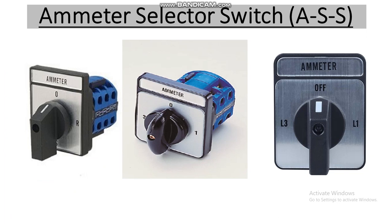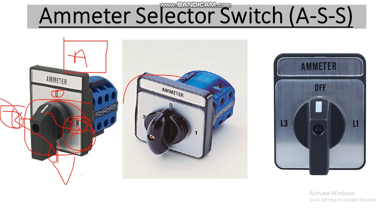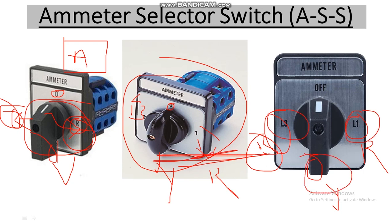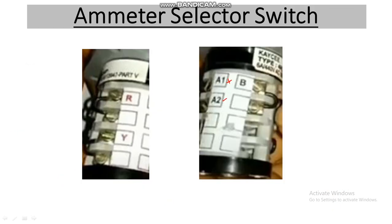The ammeter selector switch has four positions: zero, R, Y, and B. If we want to measure R-phase current we turn it to R; Y for Y-phase current, and B for B-phase. Some switches are labeled 1, 2, 3 where 1 means R-phase, 2 means Y-phase, and 3 means B, with zero being the off condition. Others are labeled L1, L2, L3 for R, Y, B respectively — the labeling differs by manufacturer but all refer to the three phases.